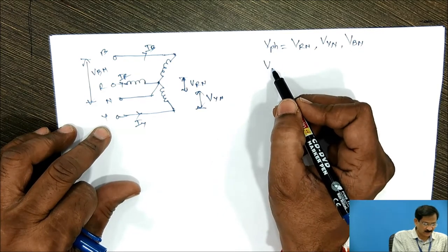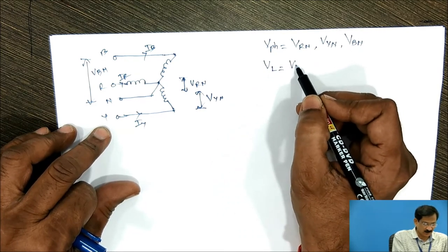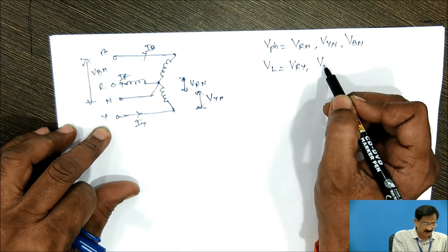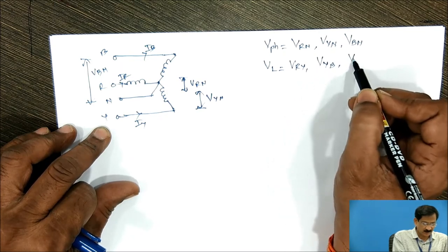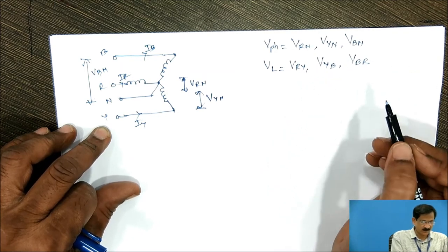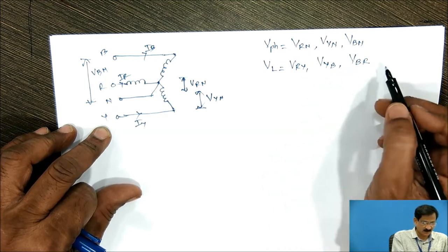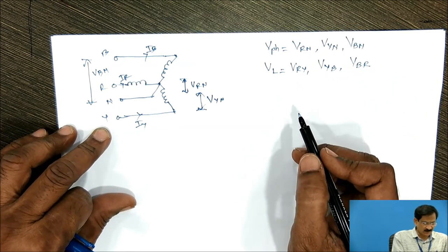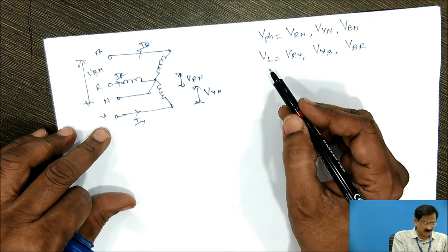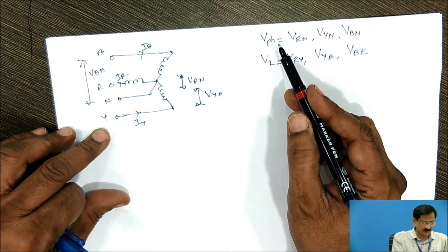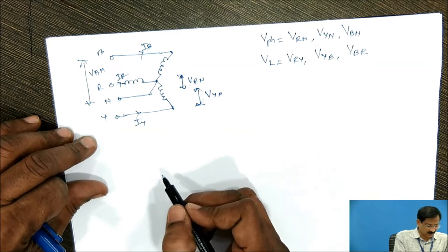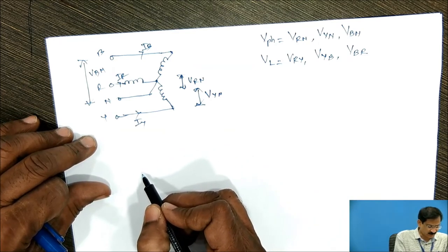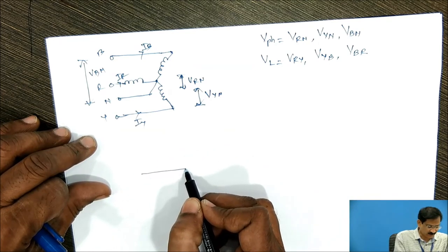What about line voltages? Line voltages are VRY, VYB, VBR. These are the line voltages. Now, it is required to find out the relation between this line voltage and the phase voltage. For that, I will draw a phasor diagram or vector diagram.